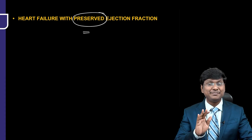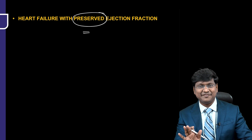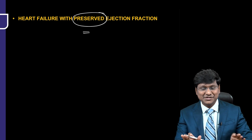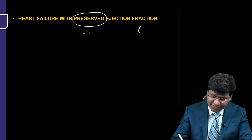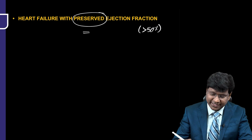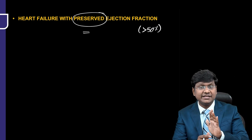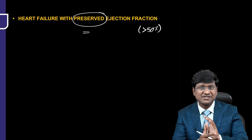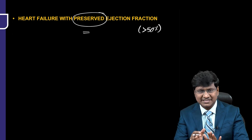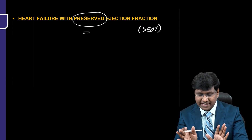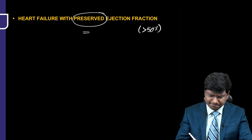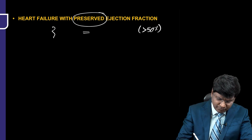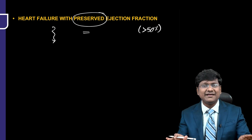Heart failure with preserved ejection fraction — preserved ejection fraction is when the ejection fraction of the individual is more than 50 percent. Usually the value is 55 to 70 percent, but even more than 50 percent is taken as preserved ejection fraction.